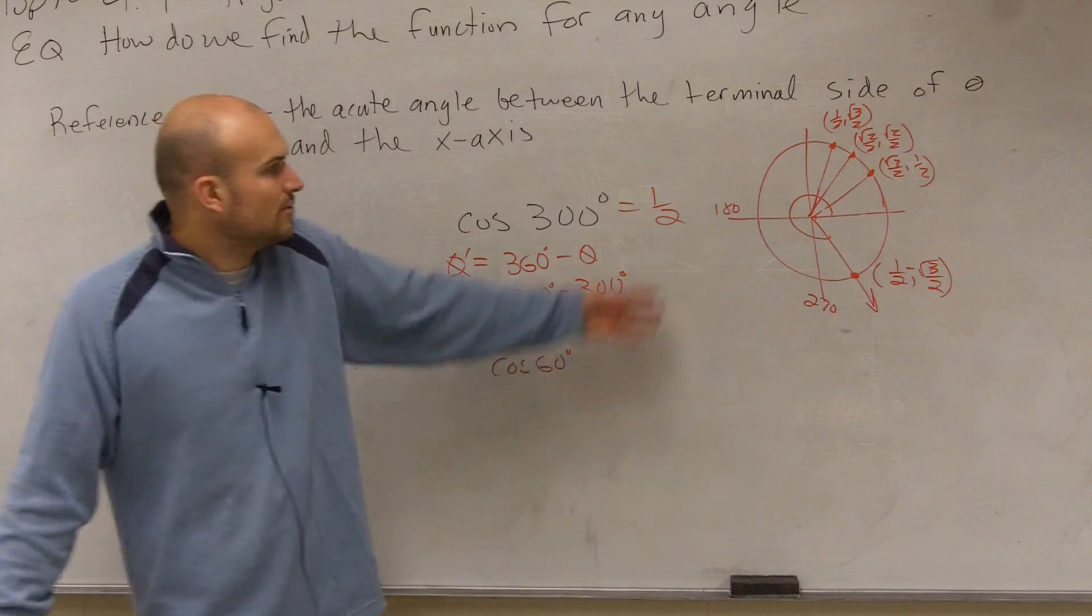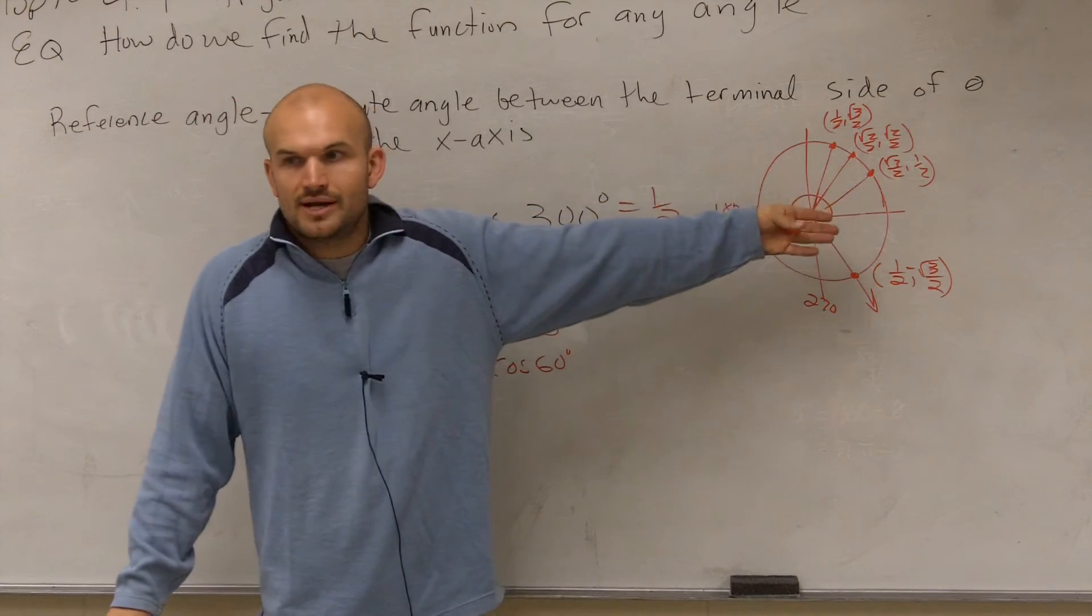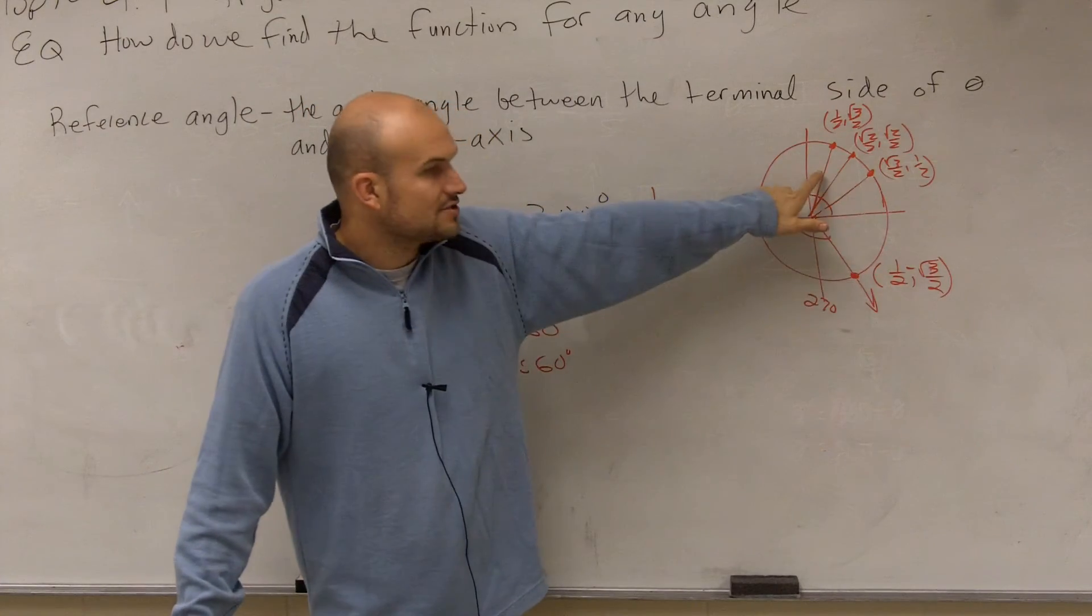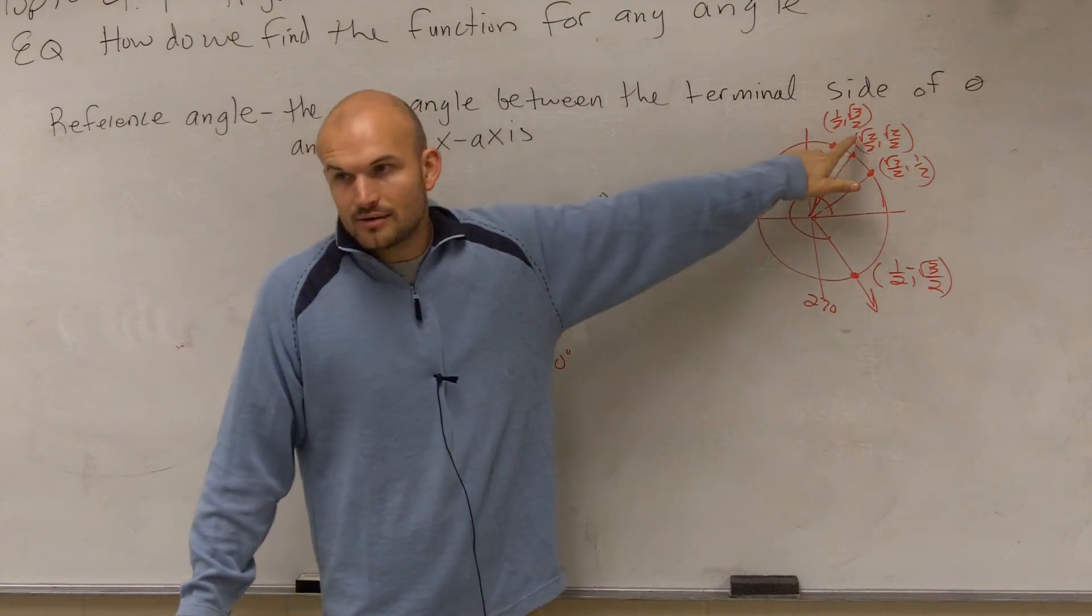What's the cosine of 60 degrees? The only one you guys need to know is that fourth quadrant, right? What's the cosine of 60 degrees? 60 degrees is right here. The cosine is what? 1 half.